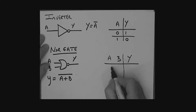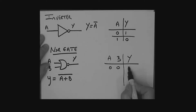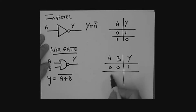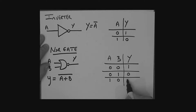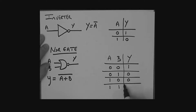Truth table for the NOR gate — A, B, Y. If A is 0 and B is 0: zero OR zero gives zero, but since we're inverting for the NOR, this is a 1. If A is 0 and B is 1: that would have given a 1 for the OR, but we're inverting, so that's a 0. If A is 1 and B is 0: OR gives 1, NOR inverts to 0. And if A is 1 and B is 1: OR gives 1, NOR gives 0.